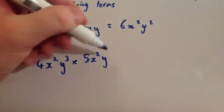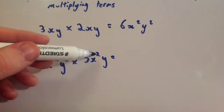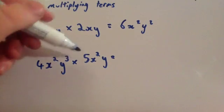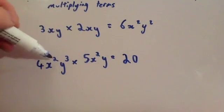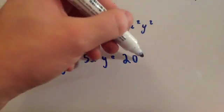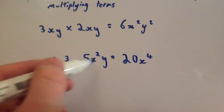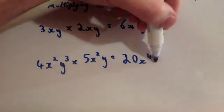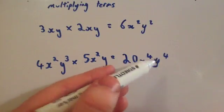Our final example: 4x squared y cubed times 5x squared y. This is about the trickiest you'd get on the foundation tier; higher tier, definitely. So 4 times 5 is 20. x squared times x squared — add the powers — gives x to the 4. And y cubed times y — that's y to the power of 1 — so 3 plus 1 gives y to the power of 4. The answer is 20x to the power of 4, y to the power of 4.